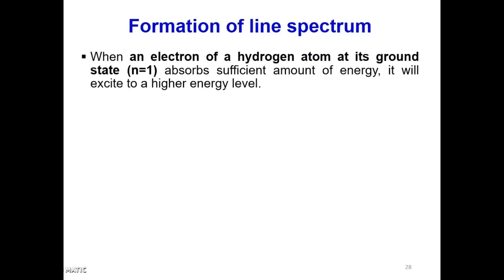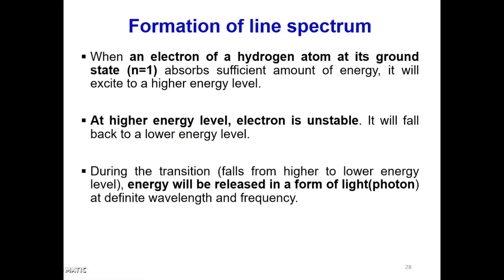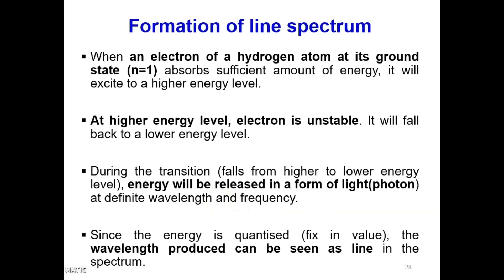When an electron of a hydrogen atom at its ground state, which is N equals to 1, absorbs sufficient amount of energy, it will excite to a higher energy level. At a higher energy level, the electron is unstable and will fall back to a lower energy level. This is referring to postulate number 3 of the Bohr atomic postulate. During the transition, energy is released in the form of light, or a photon of energy, at a definite wavelength and frequency. This corresponds to postulate number 4. Since the energy is quantized and fixed in value, the wavelength produced can be seen as a line in the spectrum.